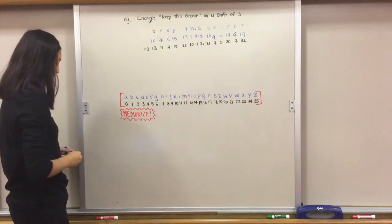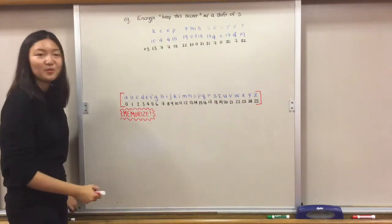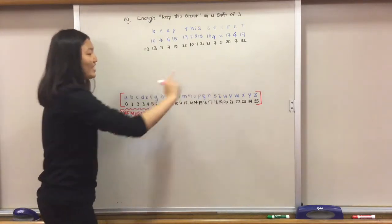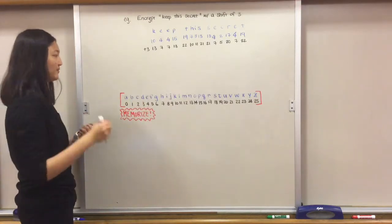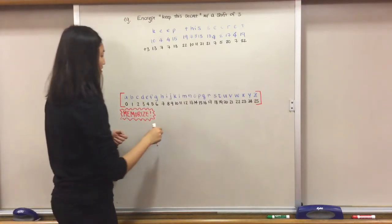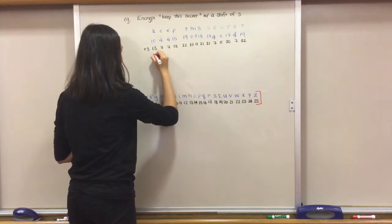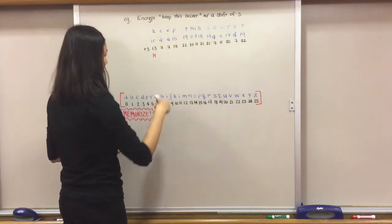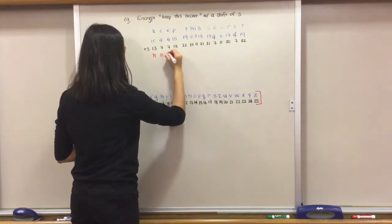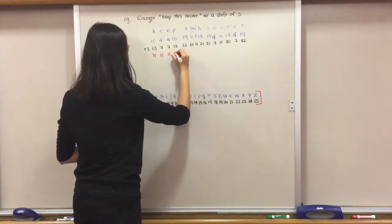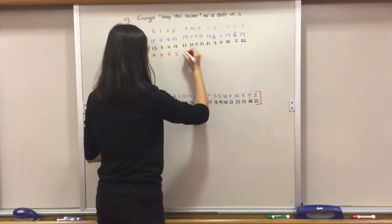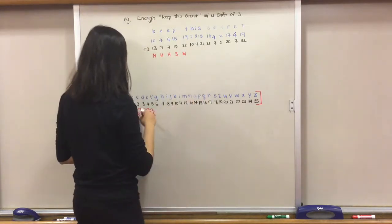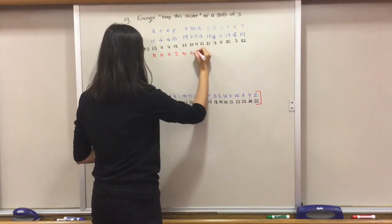Last step, we are going to change all these numbers back into the letters. 13 is N, 7 is H, 22 is W, 10 is K, 11 is L, 21 is V.